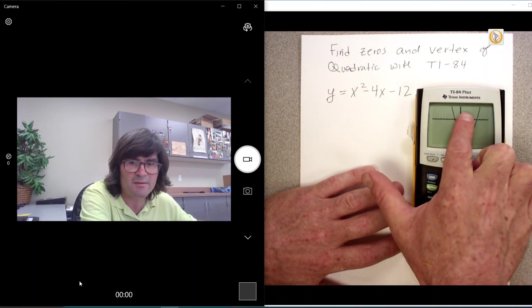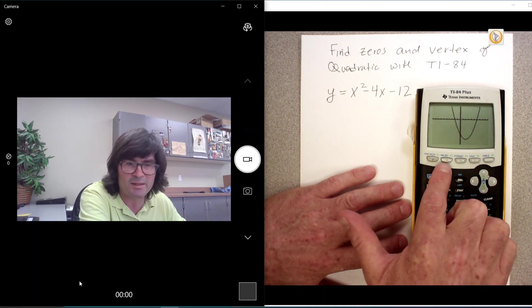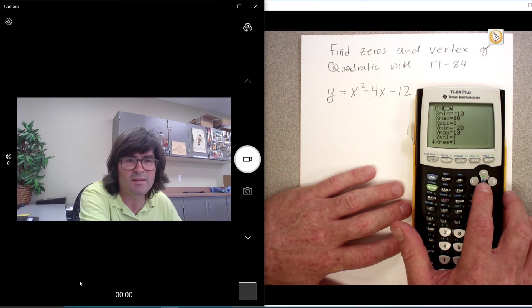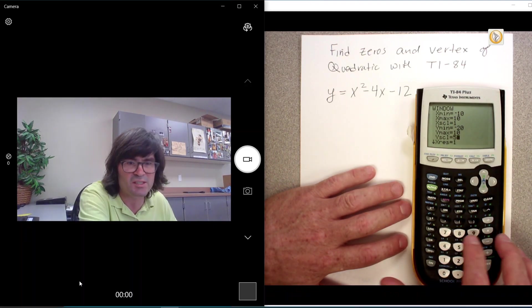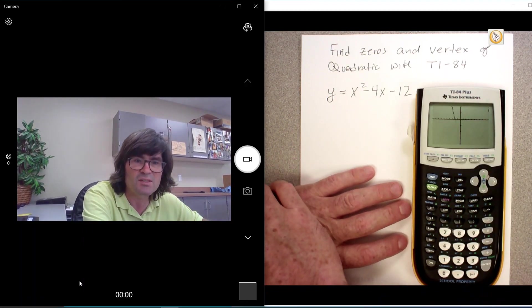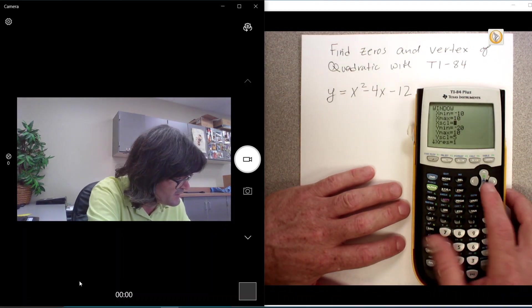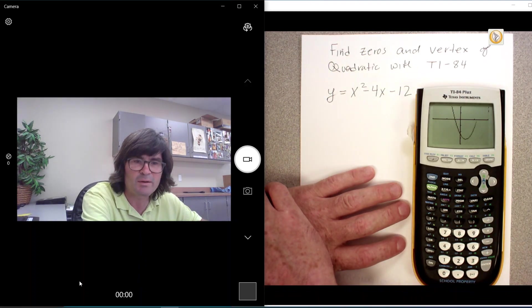My tick marks are kind of a little bit too busy there. It's hard to see. So I want to adjust that as well. Go back to window. We will make the y scale maybe count by fives. This is just how often you want a tick mark, so we'll count by fives and this will look a little bit easier. If you don't like the ones, you could also make the x's count by fives. Anyway, there's my graph.